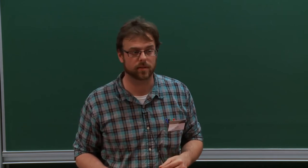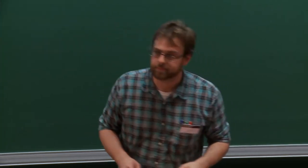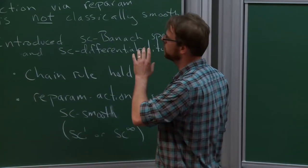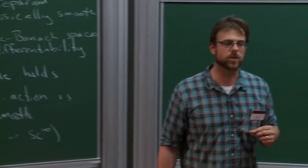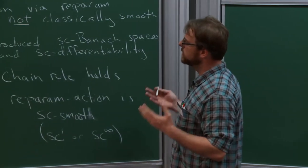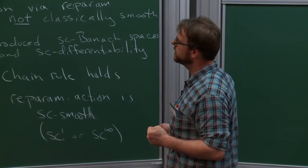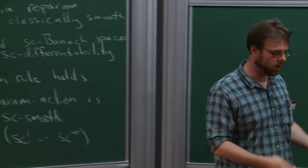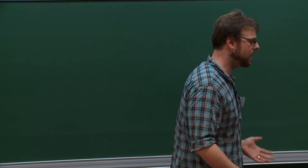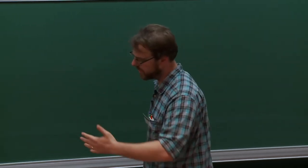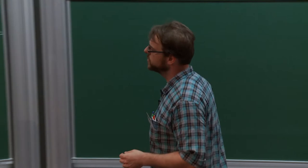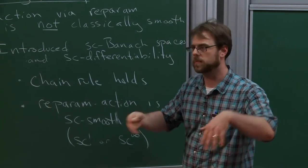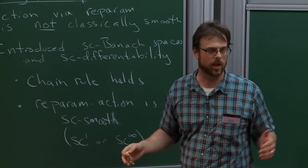So the first thing I really want to do during today's talk is recap what we did yesterday, because we're going to build on this. The first main thing was that the action of the reparameterization group is not classically smooth. We had this toy problem; we showed that it showed up in transition maps in setting up Morse manifolds for Morse homology, and then I said that the same sort of action shows up in Gromov-Witten and essentially any moduli problem you want to consider.